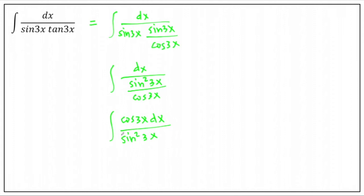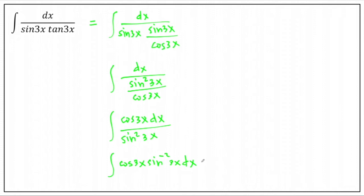Now let's transfer the sine from the denominator to the numerator — it becomes a negative exponent. That gives us the integral of cos(3x) times sin⁻²(3x) dx. We will make sin(3x) our base and use the power formula. The derivative of sin(3x) must be present in the function, and we do have cos(3x) here.